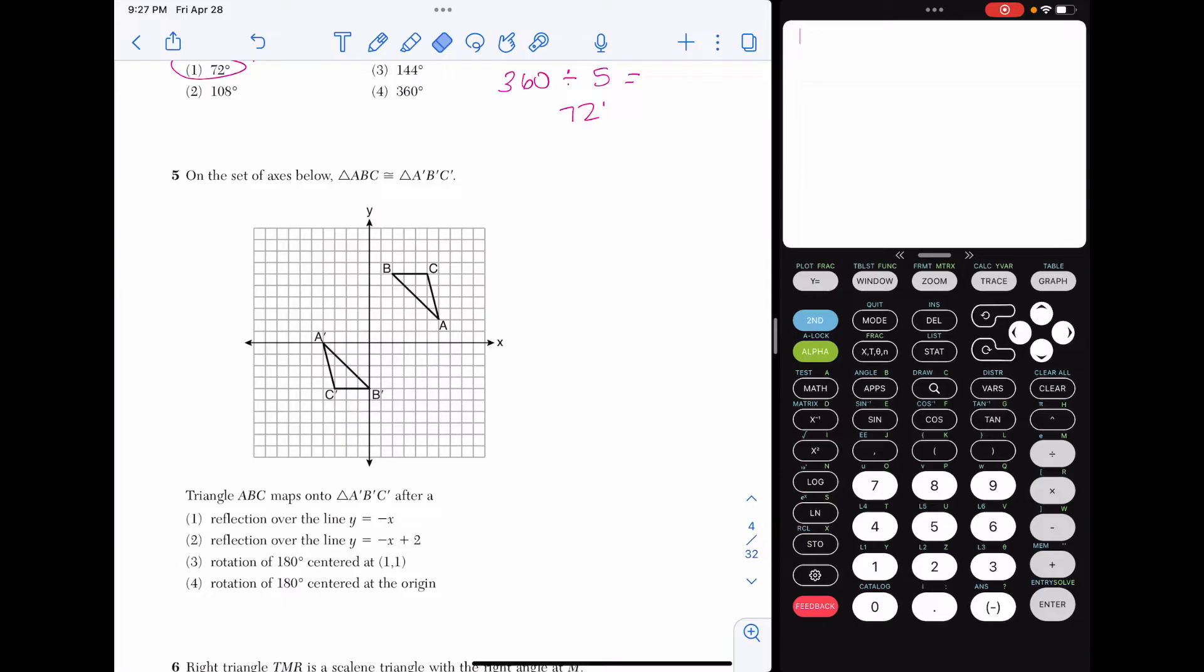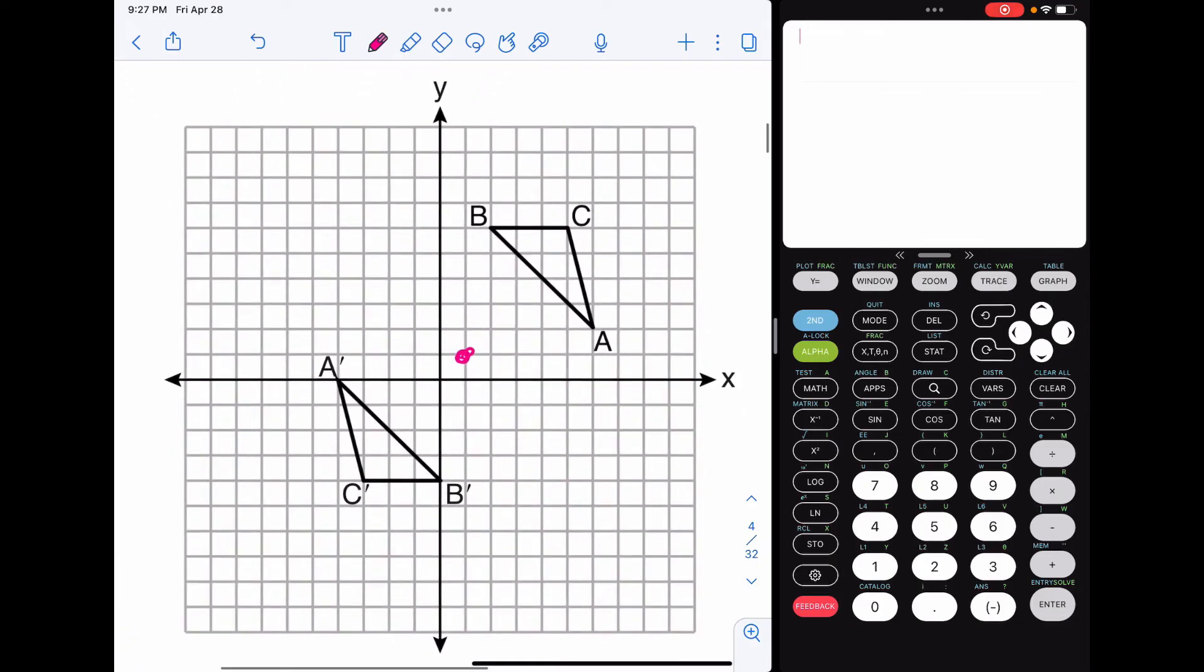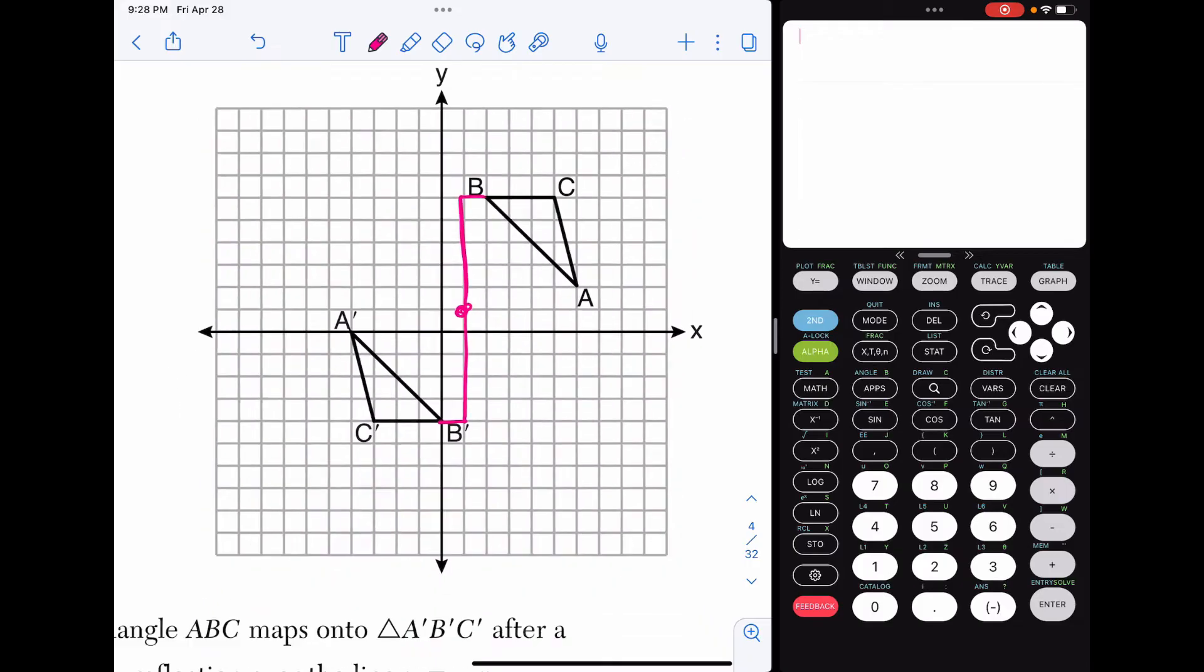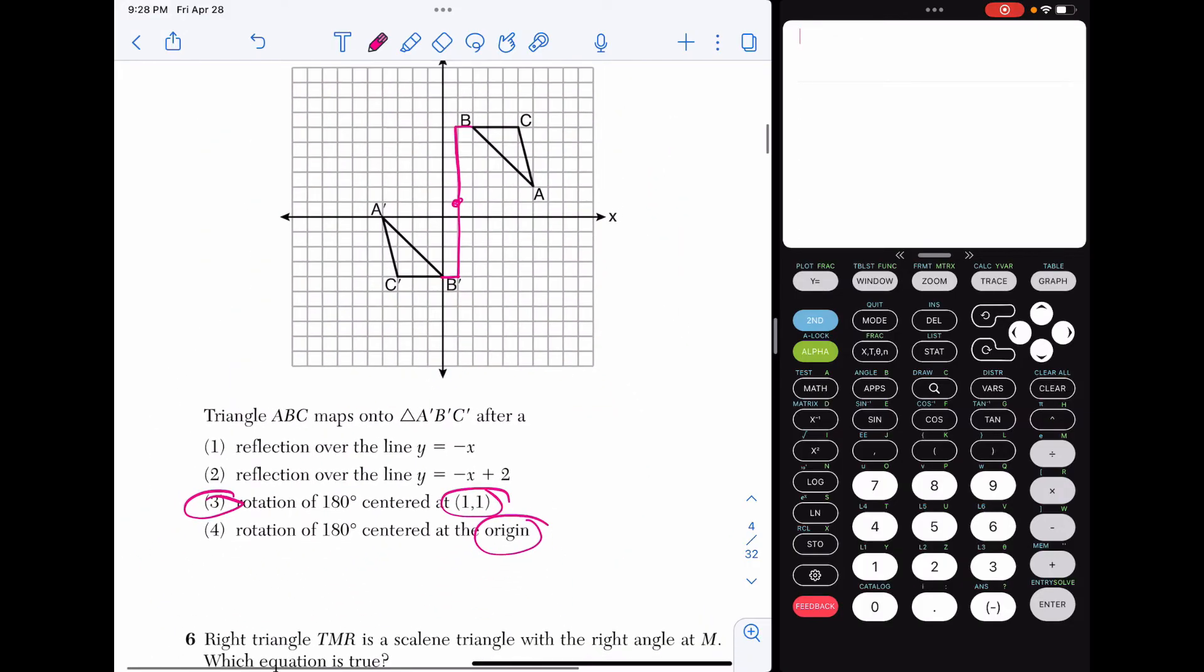So look at the two points. So you have 1, 1, and you have the origin. Which one of them is in the middle of those two pictures? And that's going to be 1, 1. And that makes choice three our answer here. One way you could verify that is if I look at my center and I go from my center to B, I'm going up 5, right 1. And if I go from the center to B prime, I'm going down 5, left 1. I'm basically doing the reverse, and they're 180 degrees. I rotate it 180 degrees.